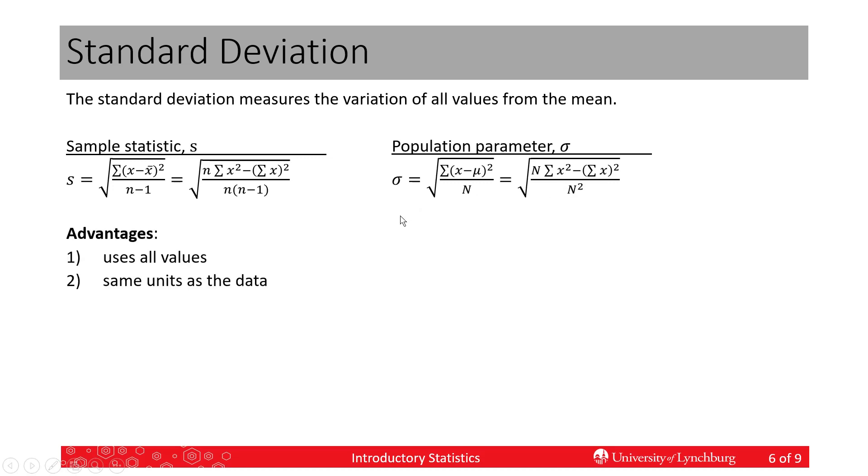Let's talk about the advantages. Unlike the range that only uses two values from the data, this uses all of the values. The range is in the same units as the data, and the standard deviation is as well. Because we're taking the square root at the end, we end up with the same units.